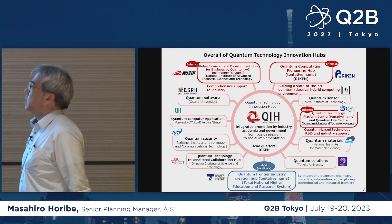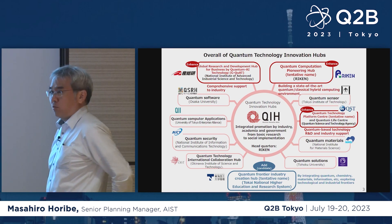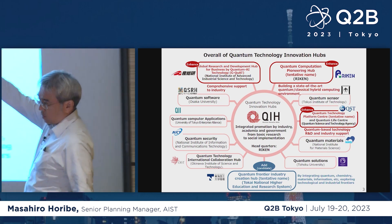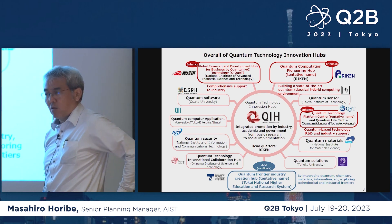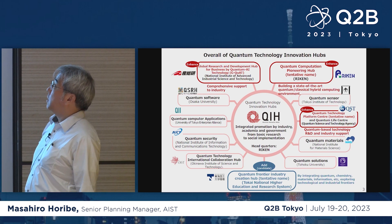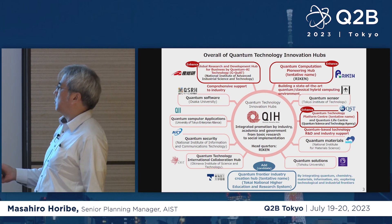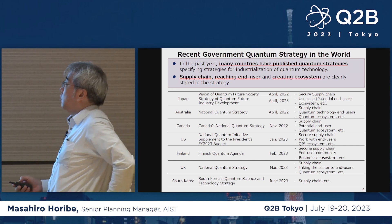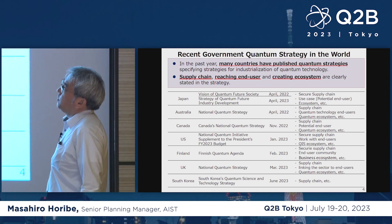As for industrial applications and social implementation, we are going to set up some research hubs and industrial hubs. Some functions of AIST have been developed and enhanced, and we started to establish quantum technology innovation hubs. Our activities and what we are going to do are outlined here.